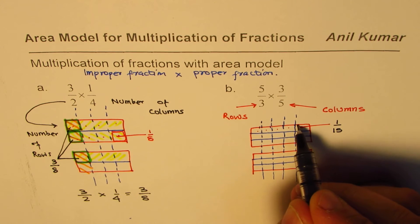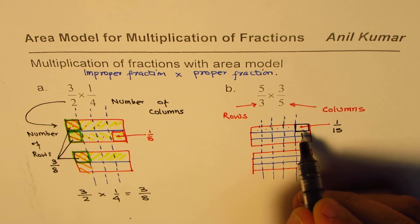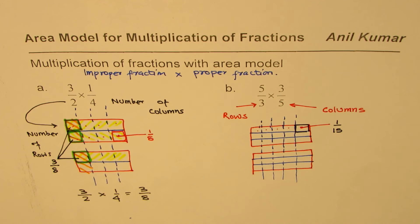So this area is 1 fifteenth. There are 15 such columns, and this is one of them. So it is 1 fifteenth of the whole rectangle. Okay.